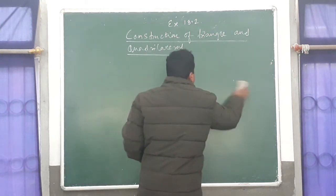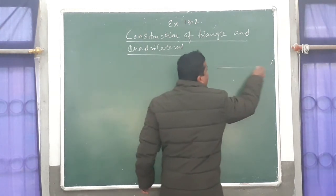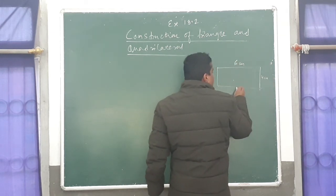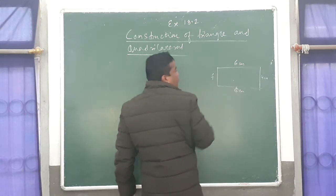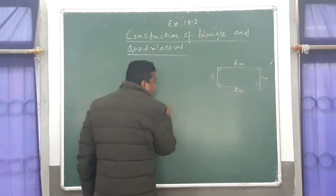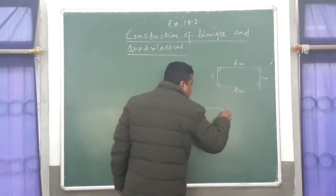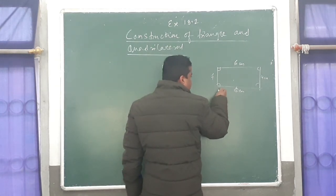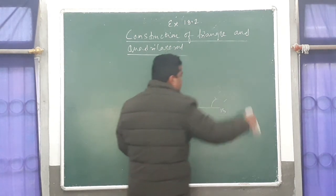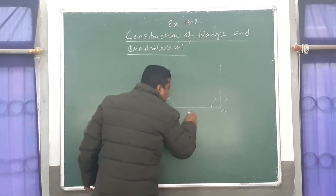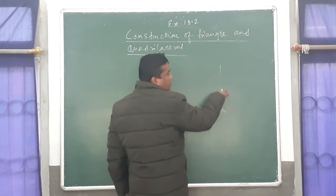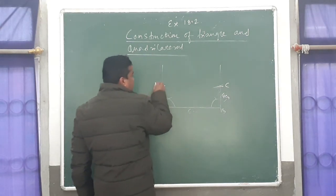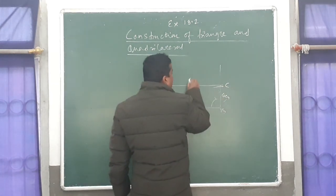Next is rectangle. Rectangle means opposite sides are equal and angles are 90 degree. If this is 6 centimeter, this is 4 centimeter, opposite side is 4 centimeter, and the other side is 6 centimeter — all angles are 90 degree. First take 6 centimeter; suppose this is A, B. The angles are 90 degree — make 90 degree: from 60 and 120 in the middle is 90 degree. Join it. This is 6 centimeter and another side is 4 centimeter — from here cut 4 centimeter. This is C and from here also 4 centimeter; this is D. This is your rectangle with sides 6 centimeter and 4 centimeter.